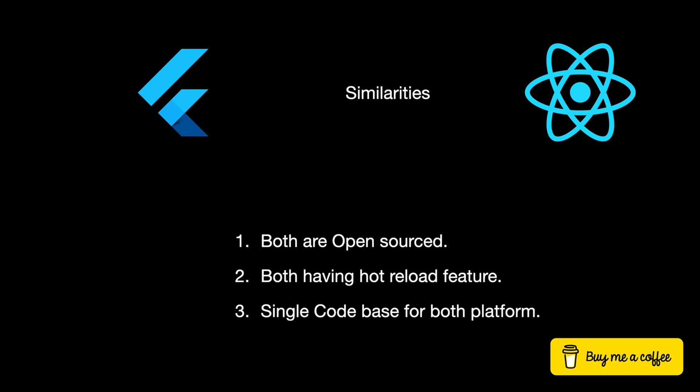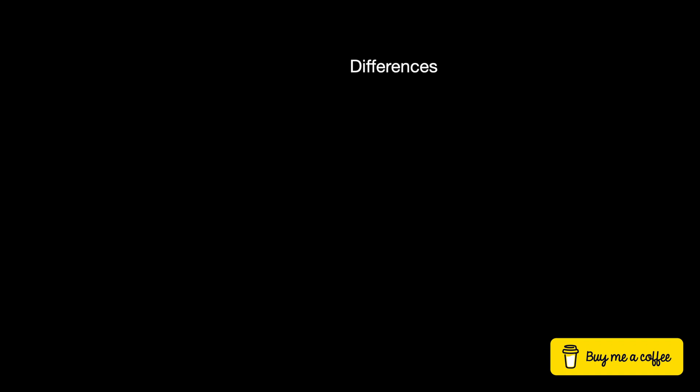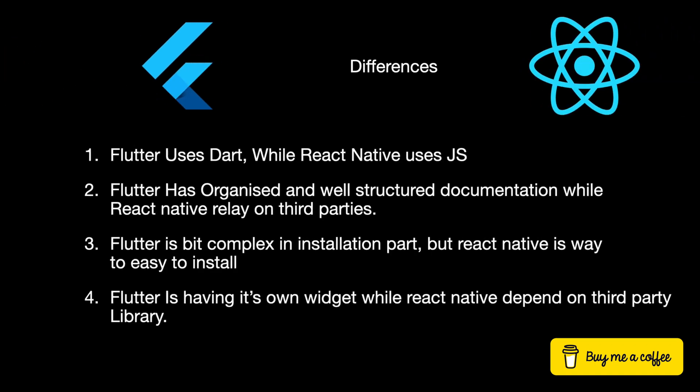Differences — the Force awakens, but differently. React Native uses JavaScript while Flutter speaks Dart, like choosing between R2-D2 and C-3PO. For documentation, Flutter's organized while React Native relies a bit on third-party help. For installation, Flutter involves some GitHub magic while React Native is a simple NPM install away. Flutter has its own widgets ensuring compatibility, while React Native embraces third-party components — a bit like getting accessories for your Starship.